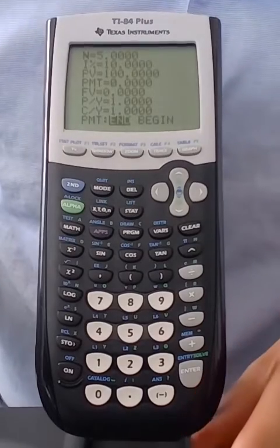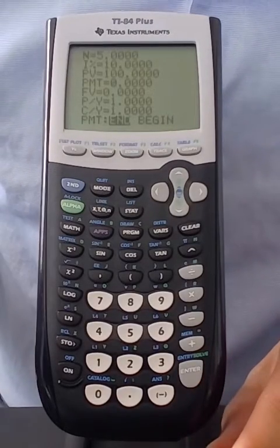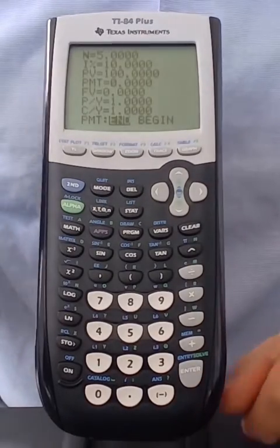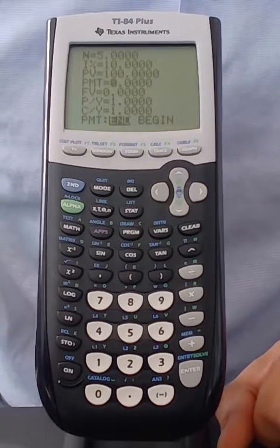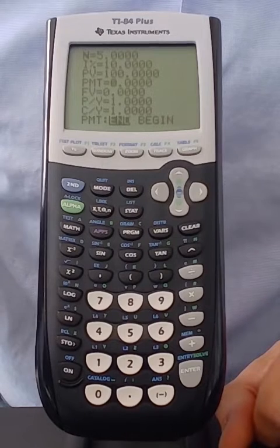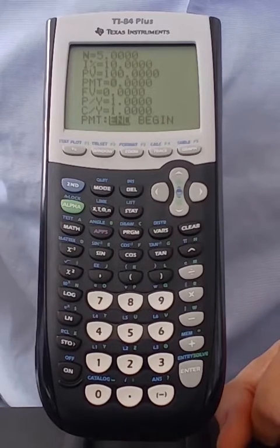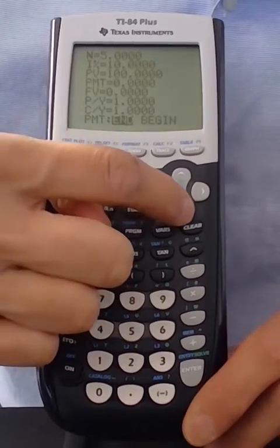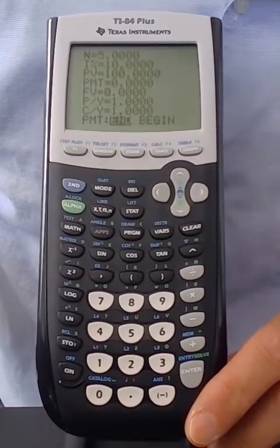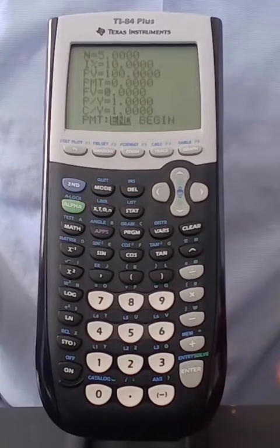I'm going to leave the default value for payment at zero. PMT stands for payment. The PMT would be used when we're dealing with annuities. That's when you have multiple cash flows in the future, not just one. But right now we're dealing with just one, and that's called a lump sum. So I'm going to go down, make sure that's left at zero. And now I'm ready to solve for the future value.